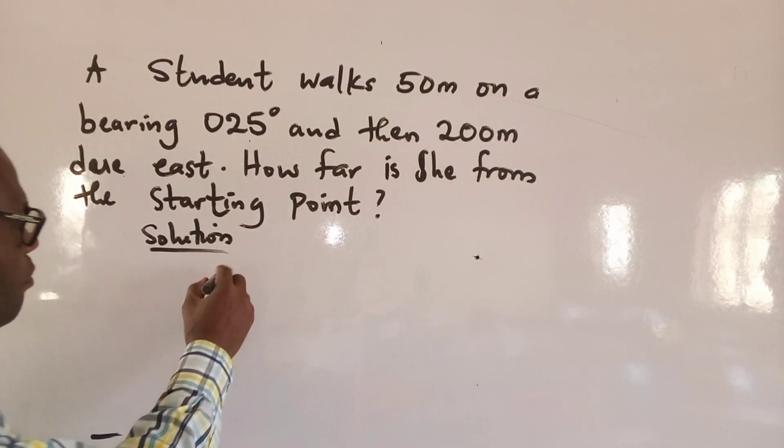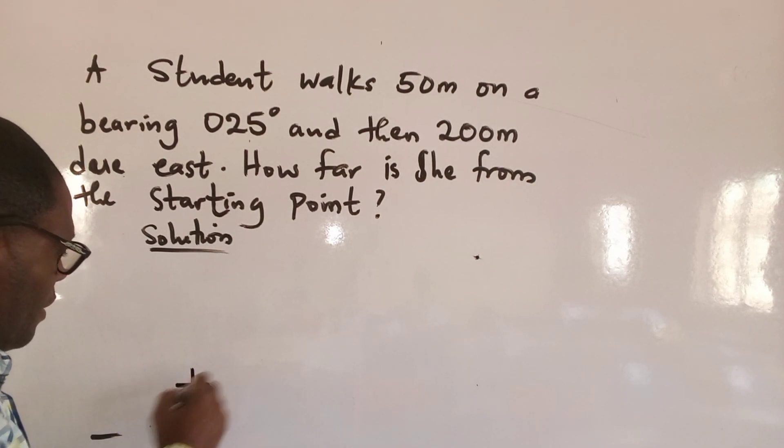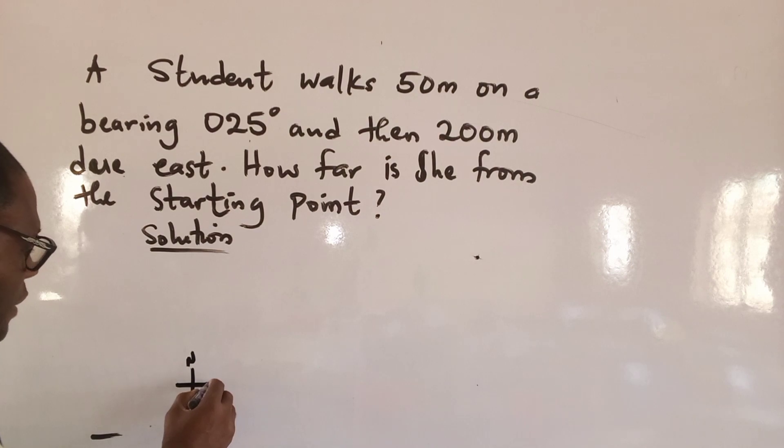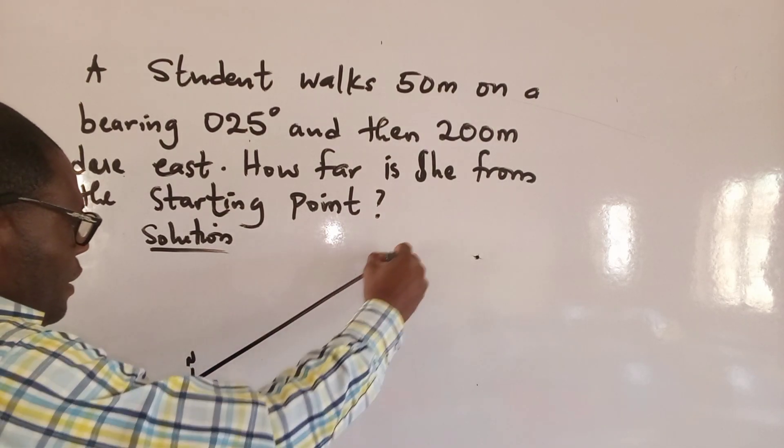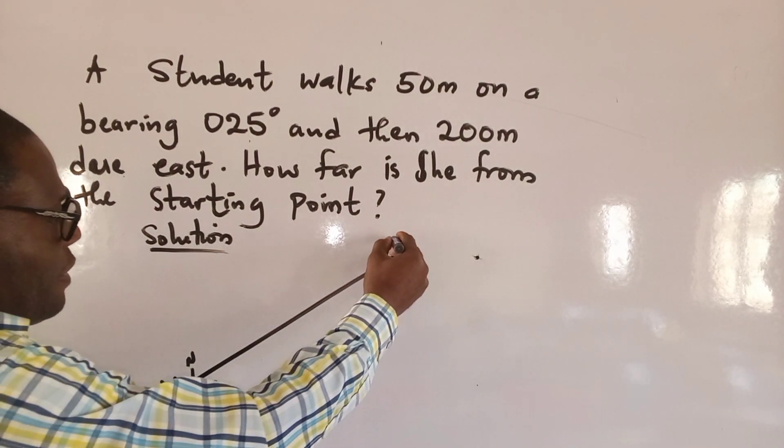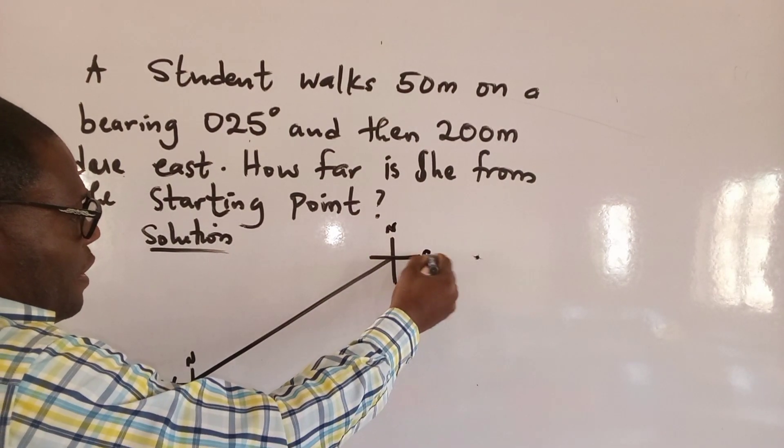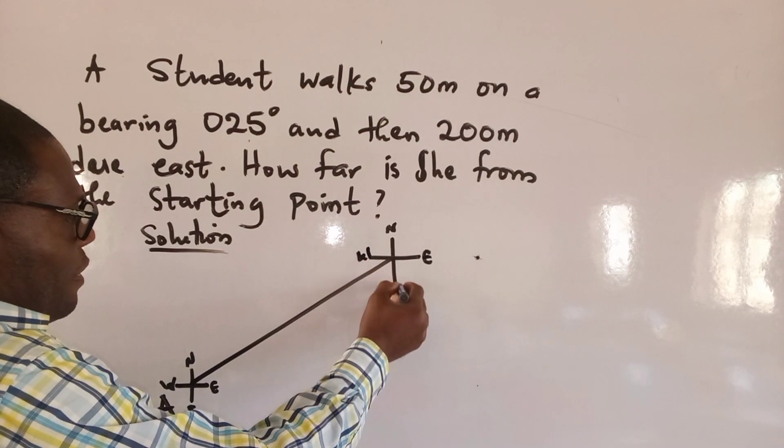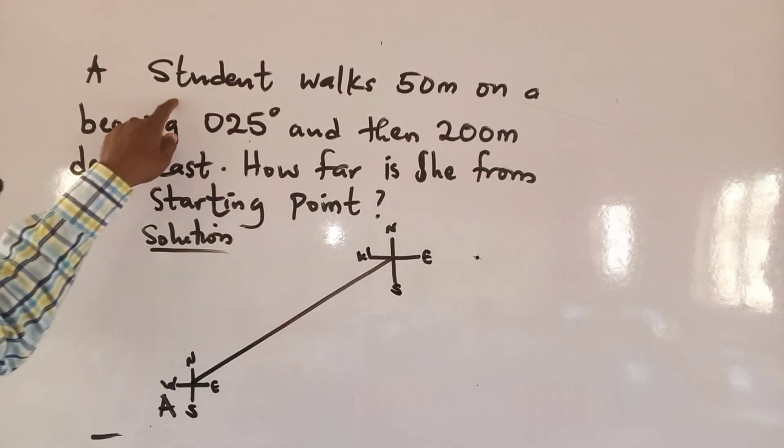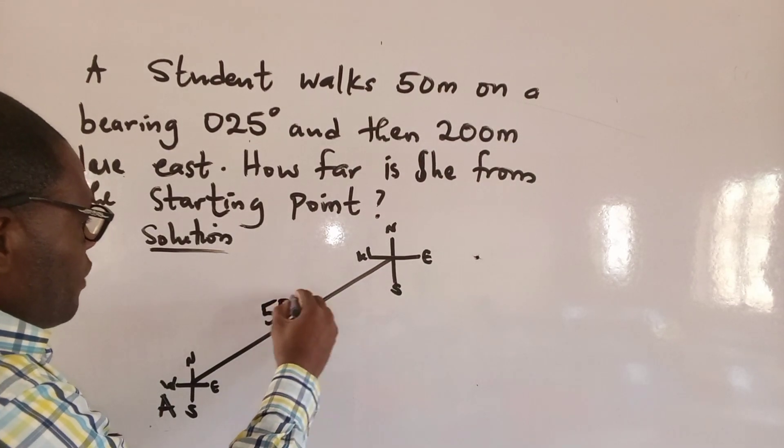At this moment we're going to start. This is the north, the east, west, and the south. Let's assume that this is our point A with north, east, west, south. And they said the student walks 50 meters. Let's assume that this is 50 meters.